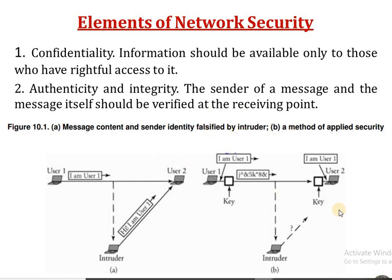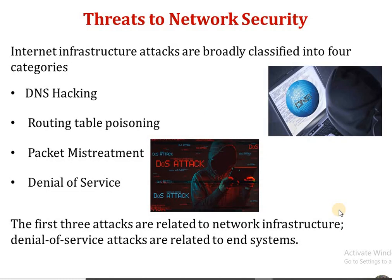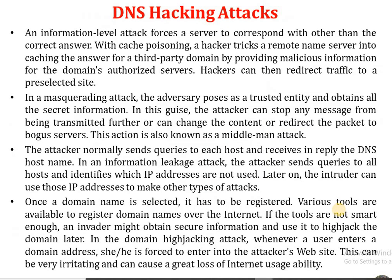Threats to network security — internet infrastructure attacks — are classified into four main categories: DNS hacking, routing table poisoning, packet mistreatment, and denial of service. The first three attacks are under network infrastructure, whereas the last one is related to end systems.